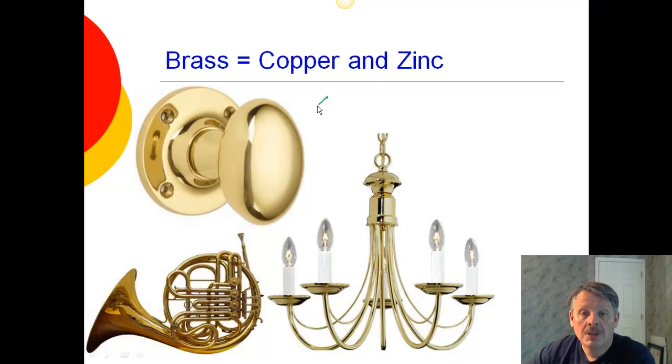For example, we can take brass, which is copper, a mixture of copper and zinc. And so we get this shiny brass color. And typically, it doesn't discolor much, whereas copper does discolor. We'll talk about that in a moment.